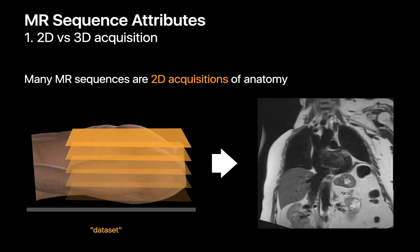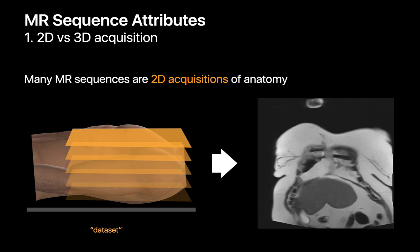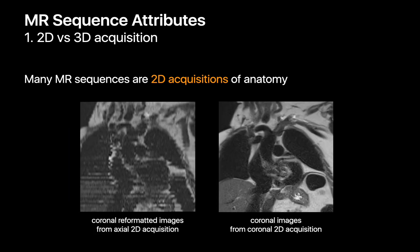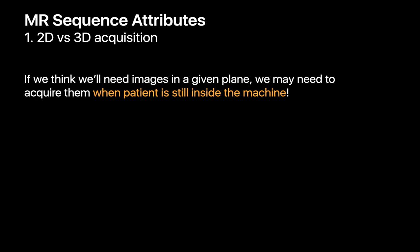So you'll get a much nicer coronal image by running the sequence directly in the coronal plane. Just look at the difference between coronal reformatted images from axial 2D acquisitions versus direct coronal 2D acquisitions of the chest. The TLDR is: we need to think ahead, determine what planes we'll want to review images in, and if the sequence can only be acquired two-dimensionally, do an additional pass while the patient is still inside the MR machine.